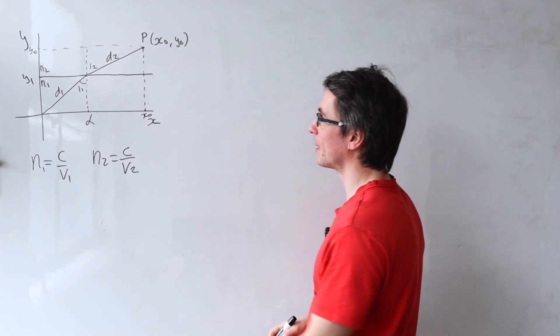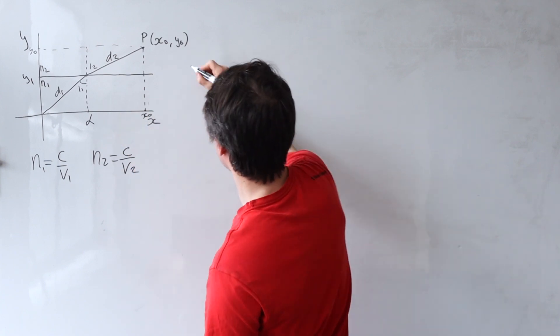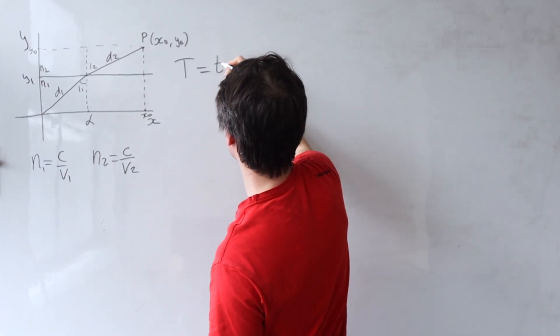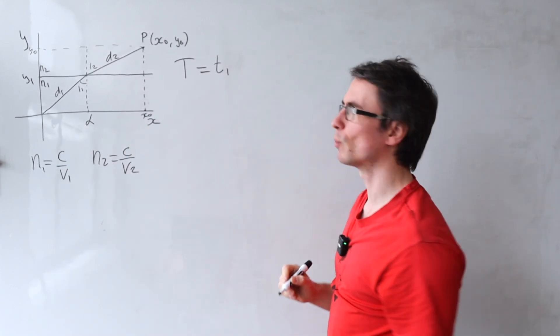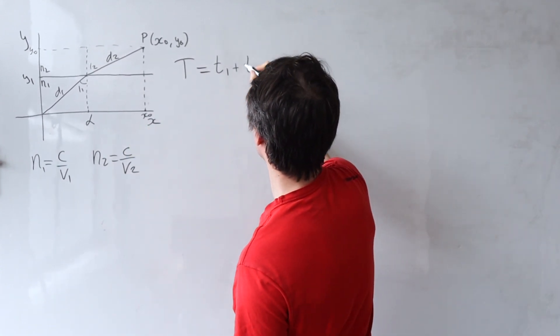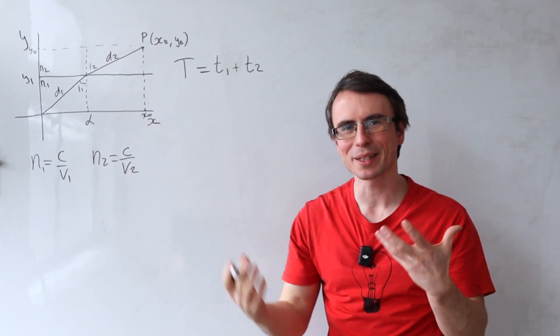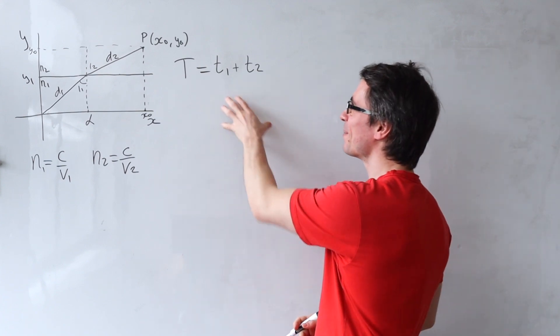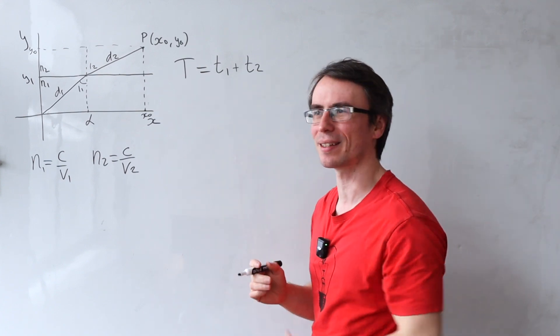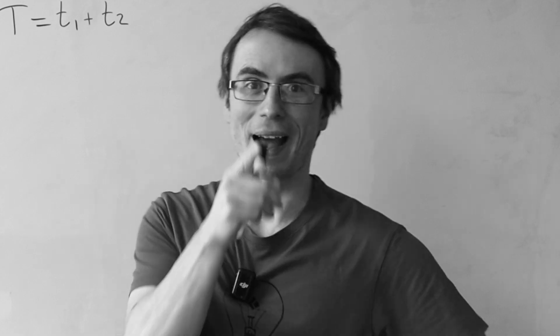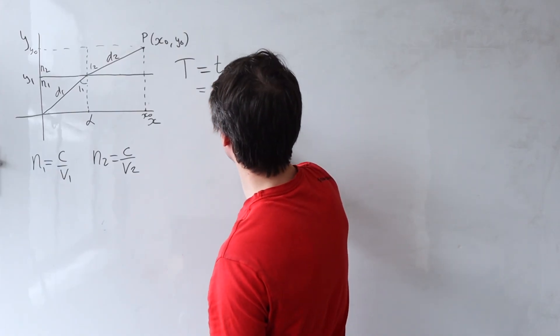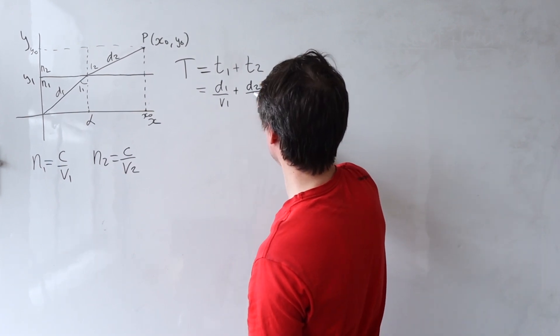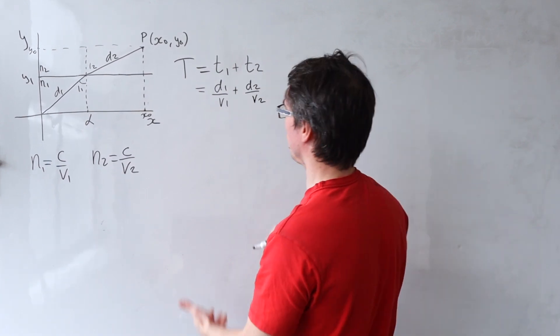The same is going to be true for the second substance which is going to be c divided by v2. What about the total time that the light ray is going to spend in there? Well let's call this t. Well that's just going to be equal to t1 the time that it spends in medium one plus t2 which is going to be the time that it spends in medium two. Now as we remember from school physics time is distance over speed. So we can actually write this as d1 divided by v1 plus d2 divide that by v2.